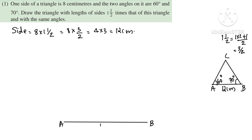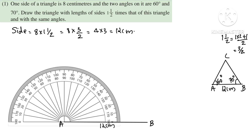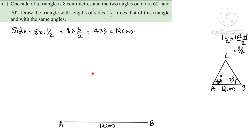Now we have side AC. At point A, the angle AL is 60 degrees. We place the protractor with its center at A, aligning with line AB. Counting 0, 20, 40, 60 — we mark the 60 degree angle.